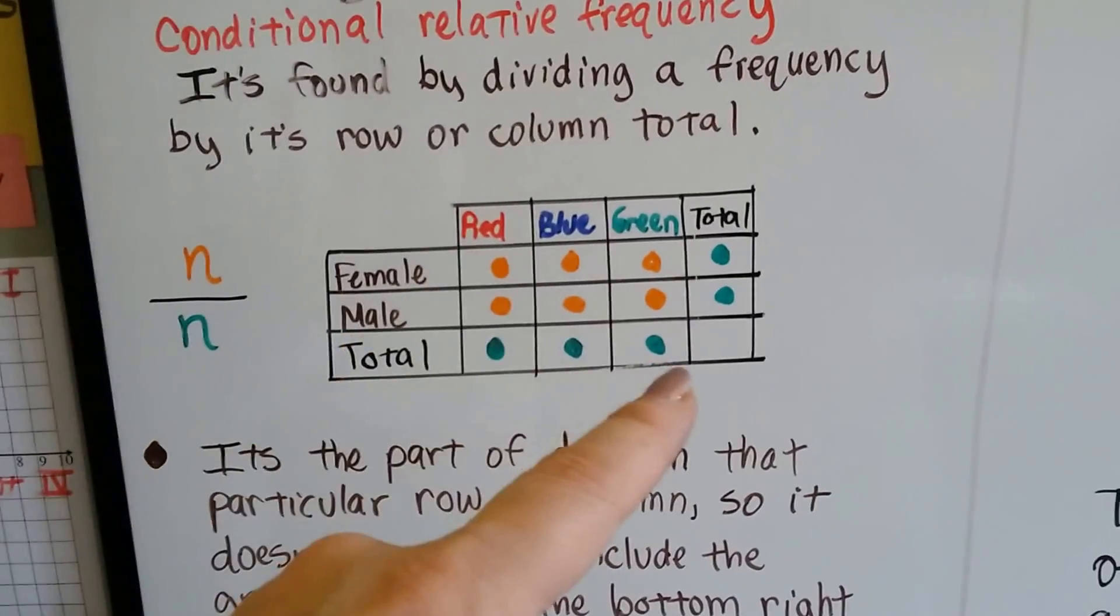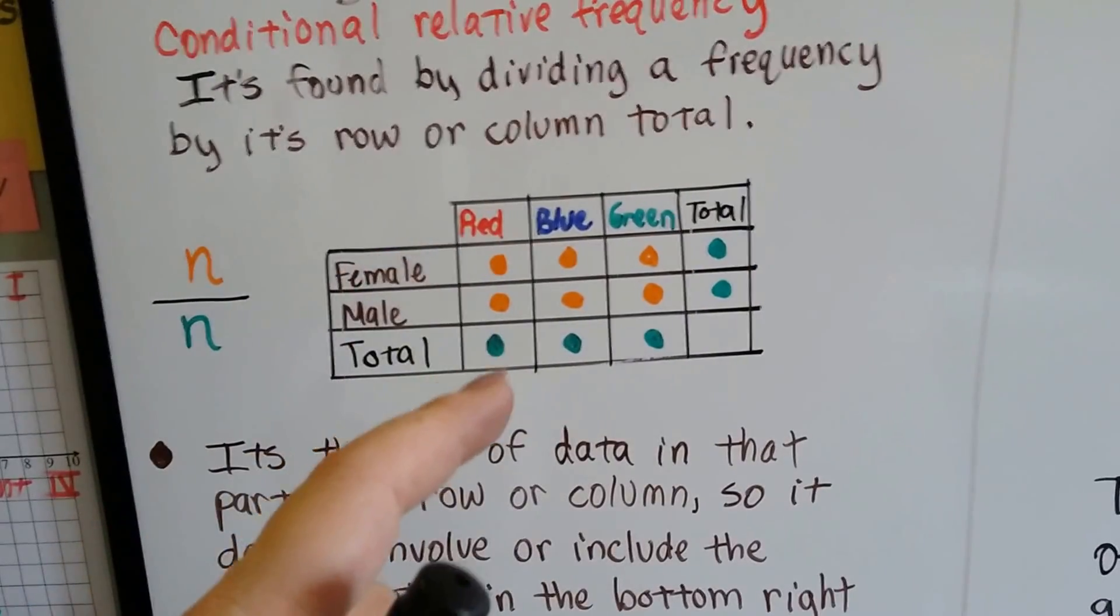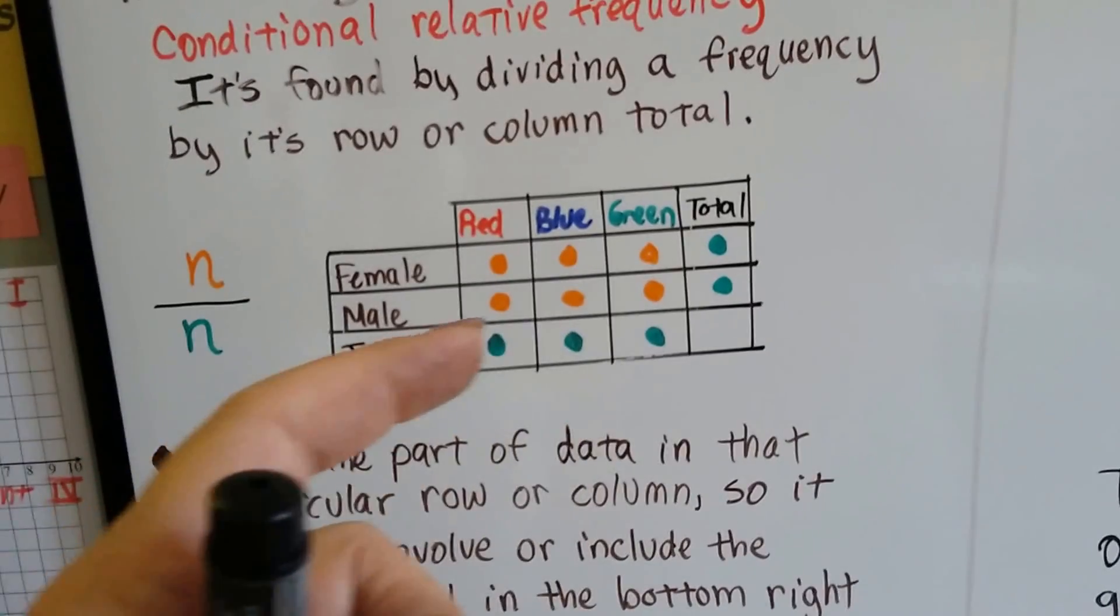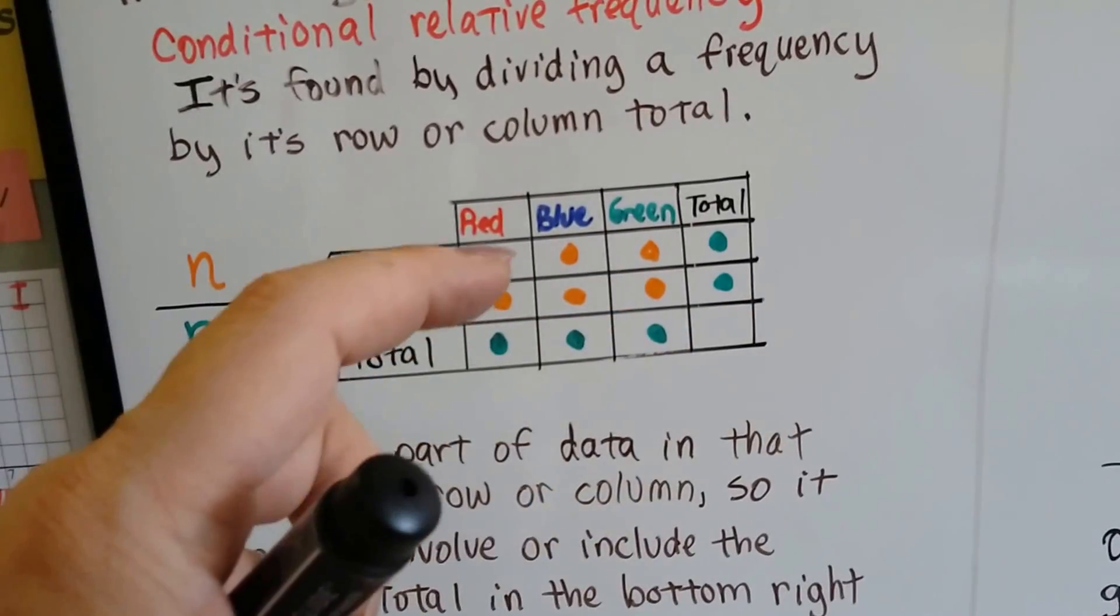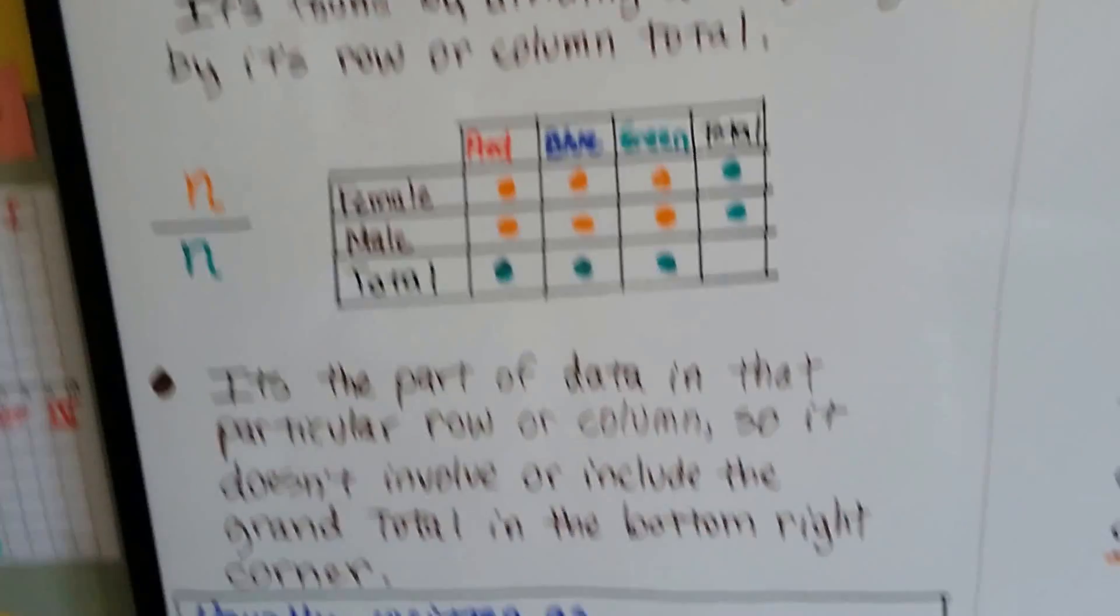You can't divide this one by that one. It's got to be in the correct row or column. Any one of these three could be divided by that one, or any of these three could be divided by that one, or these two by that one, or these two by that one, or these two by that one. It's got to be in that row or column.